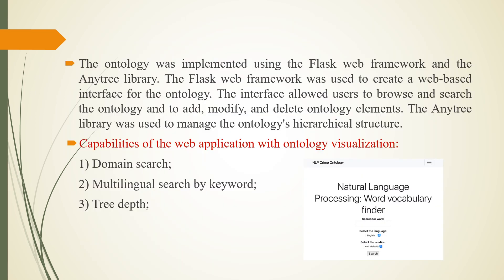This paper presents the development of a crime ontology based on the Flask web framework and the Anytree library. The Flask web framework is a lightweight web application framework written in Python, commonly used for web development including the creation of RESTful APIs. The Anytree library is a Python library for working with tree data structures, providing an easy-to-use API for creating, navigating, and modifying tree structures. Flask was used to create a web-based interface allowing users to browse, search, add, modify, and delete ontology elements, while Anytree managed the ontology's hierarchical structure.